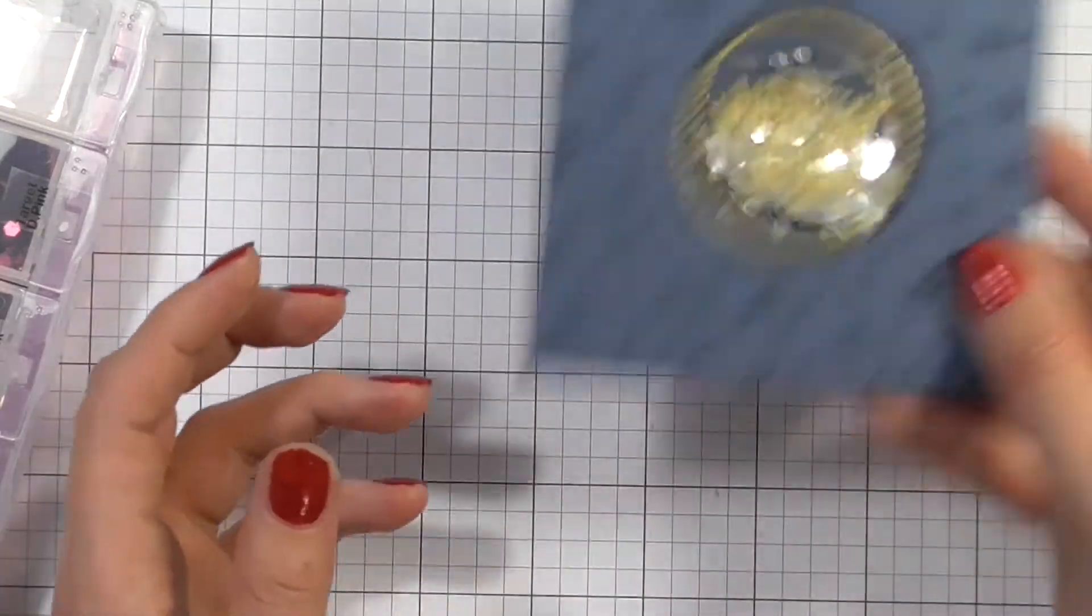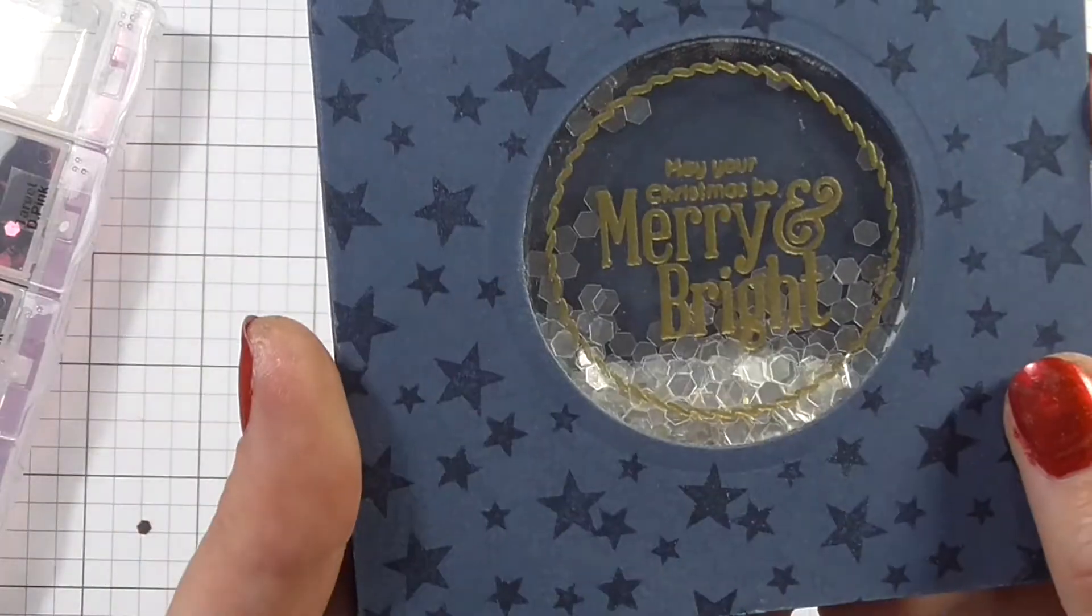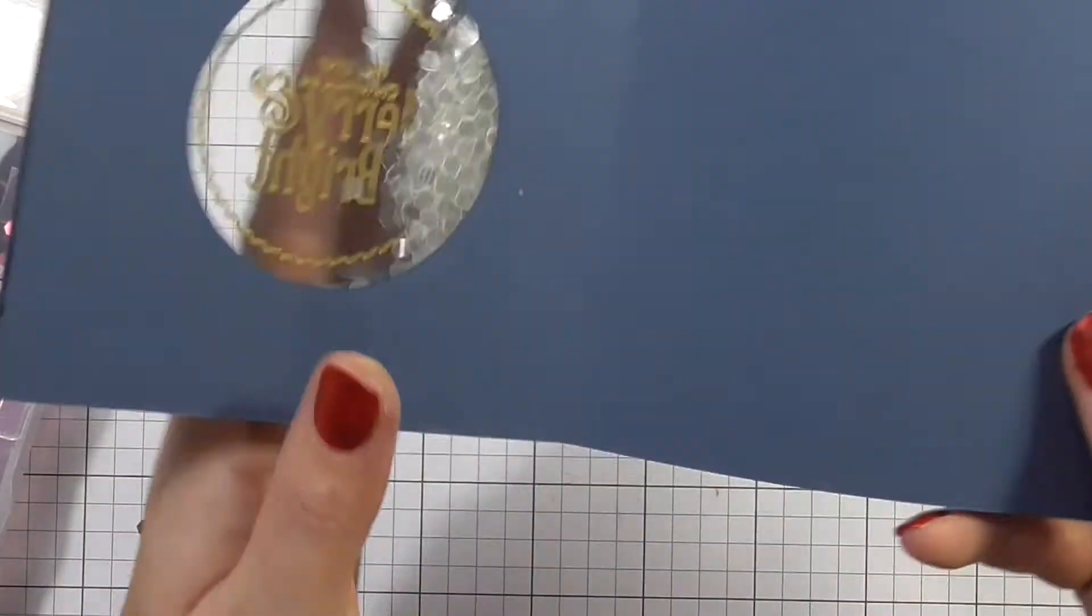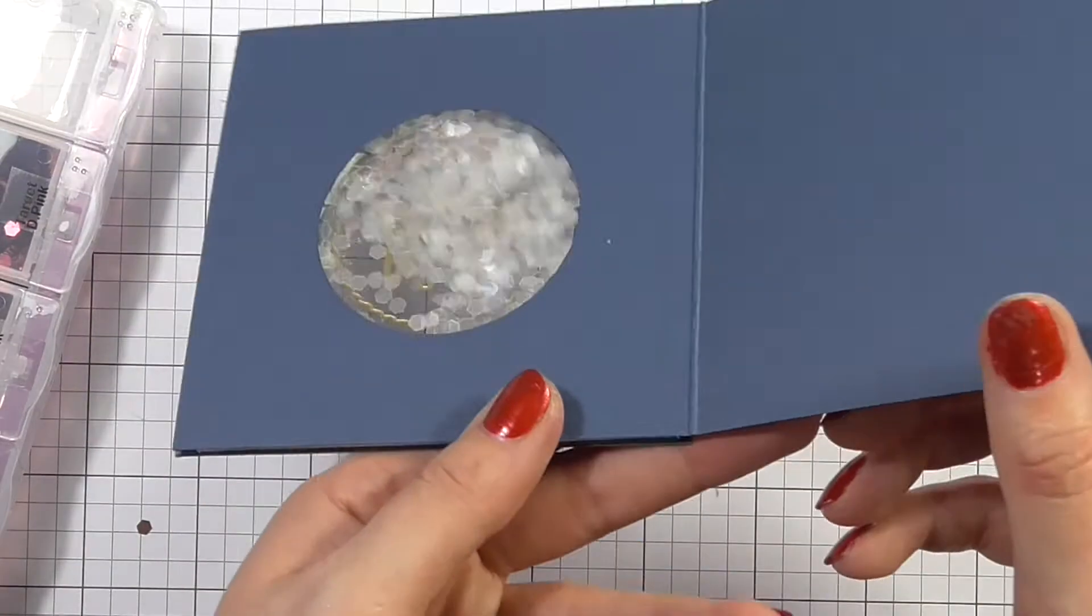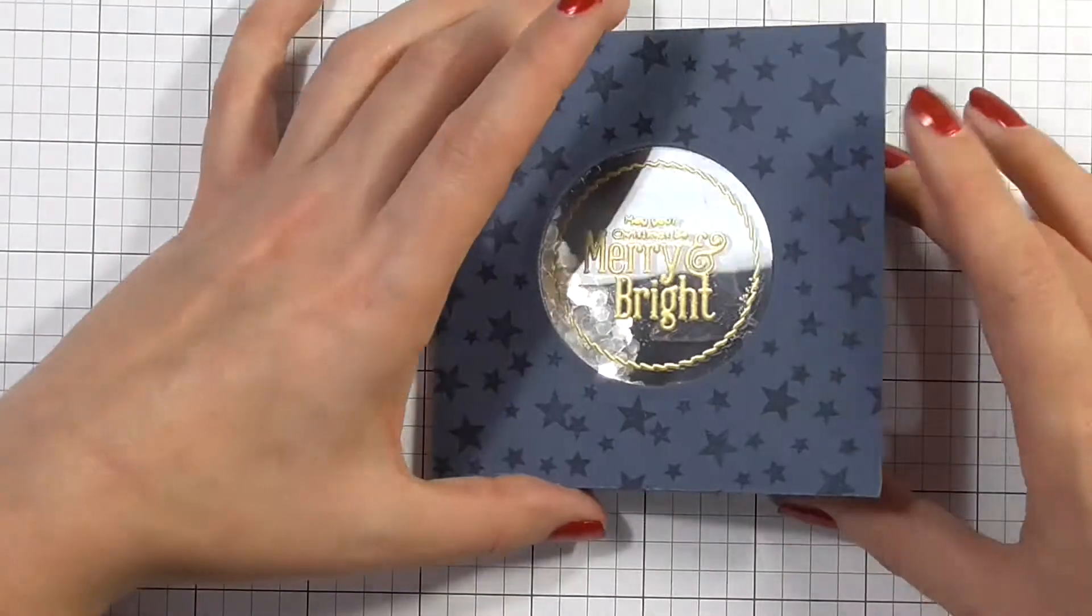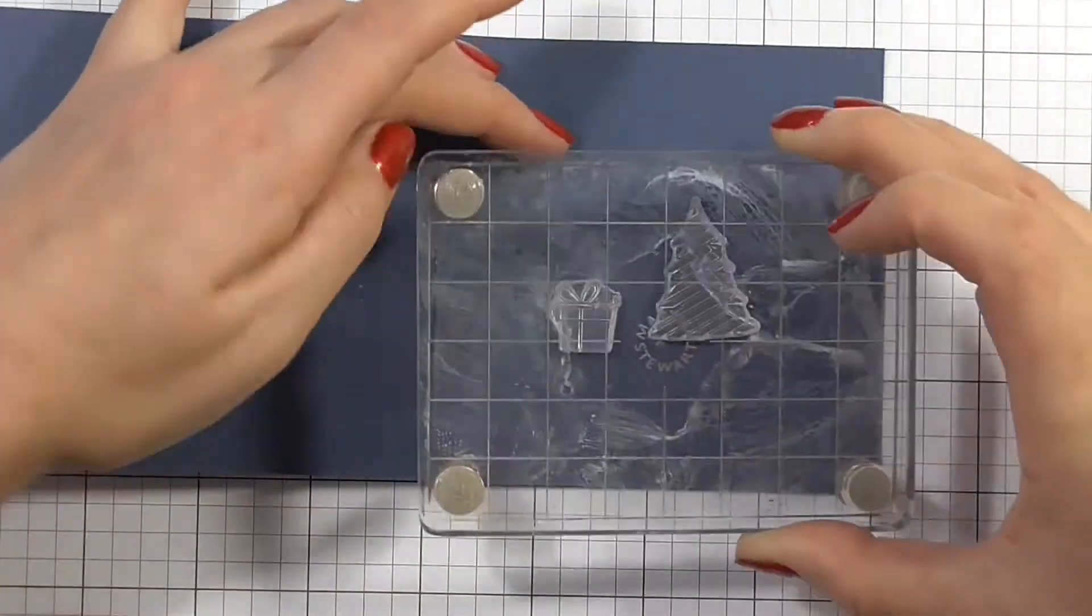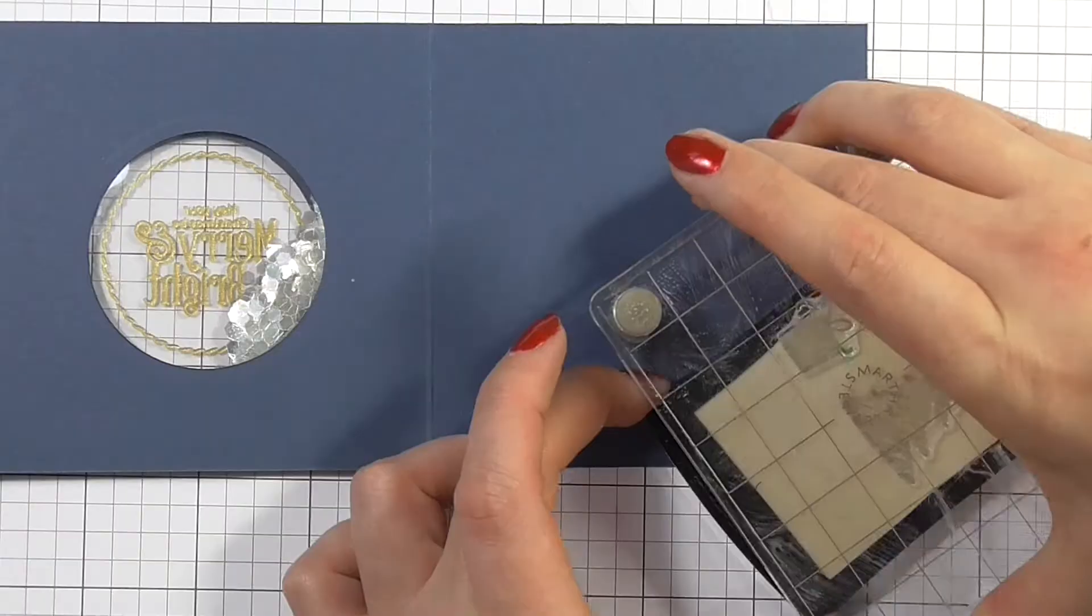Okay so I'm just pressing that all down firmly in place so when I give this card a shake nothing falls out. I'm really pleased with how this looks but I decided it just needed a little something on the inside because that shaker area is completely see-through, straight through to the inside of the card, so I thought it might be quite nice to have something stamped inside.